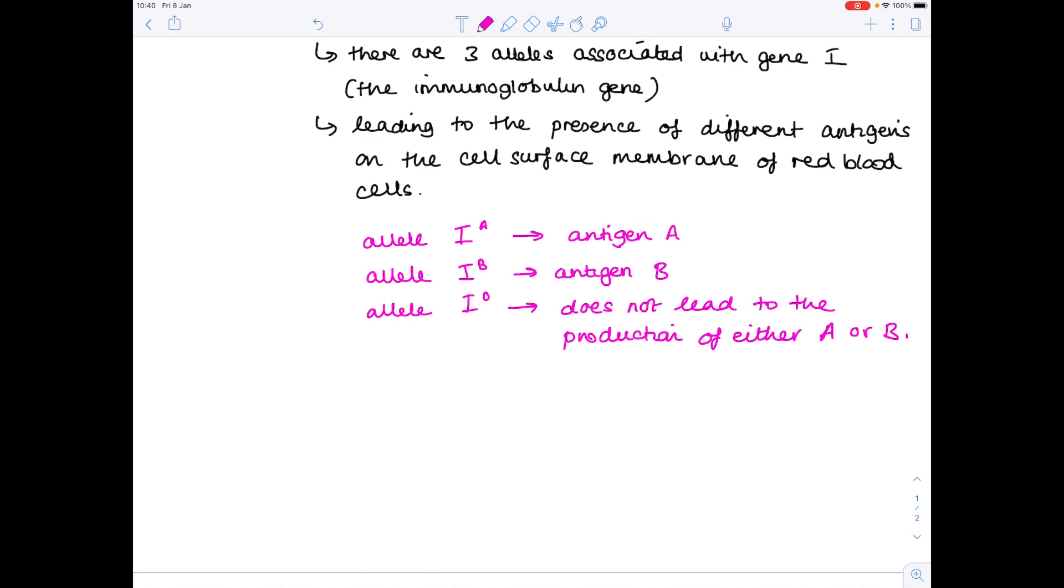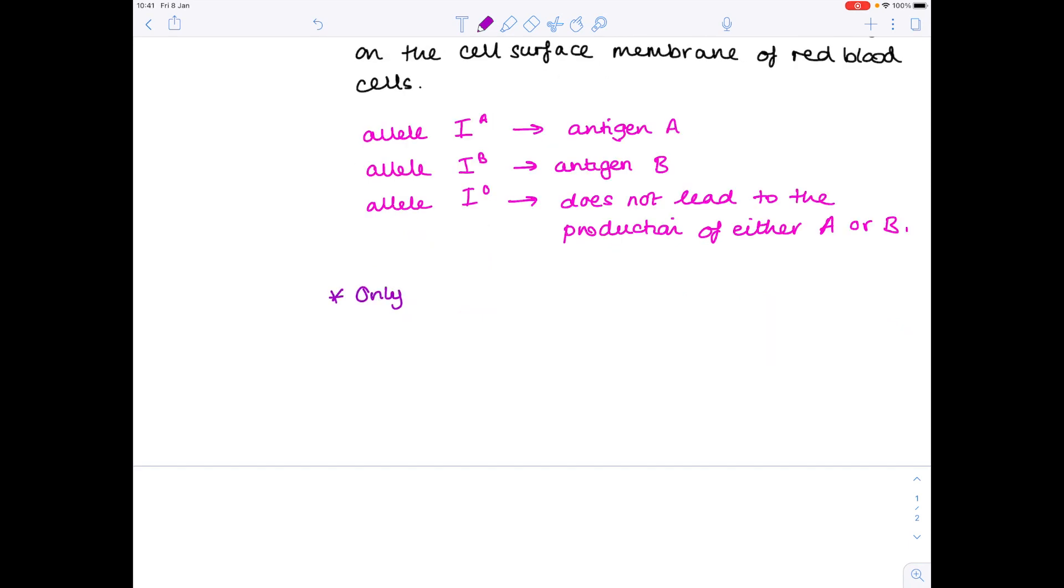Now despite the fact that there are three different antigens only two can be present in an individual at any one time. So only two alleles can be present in an individual.